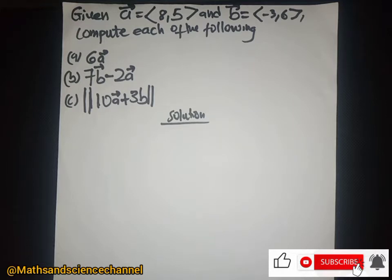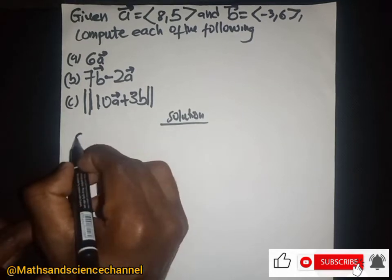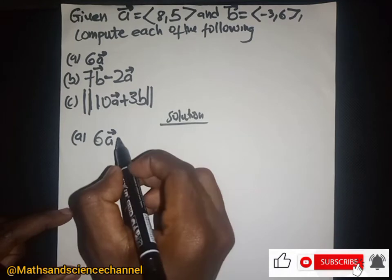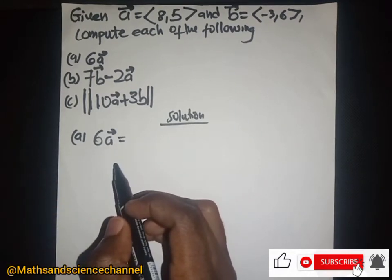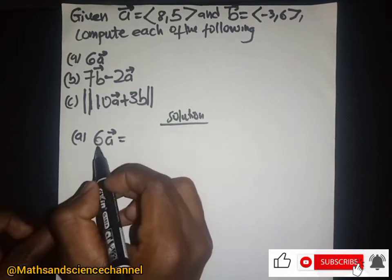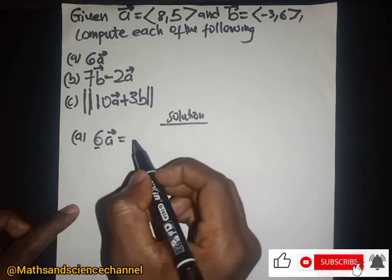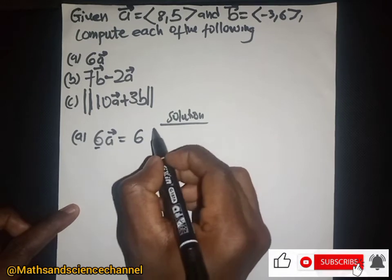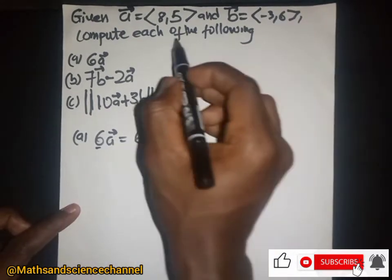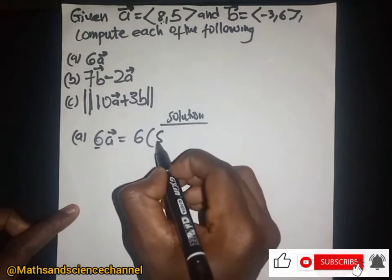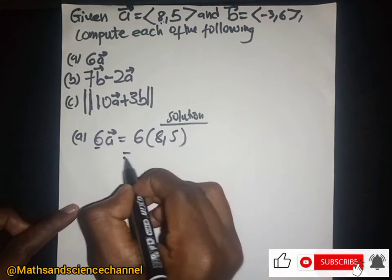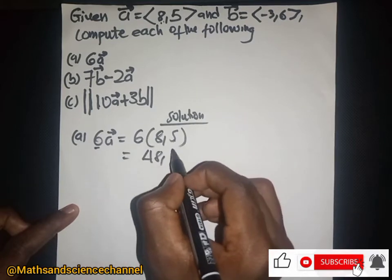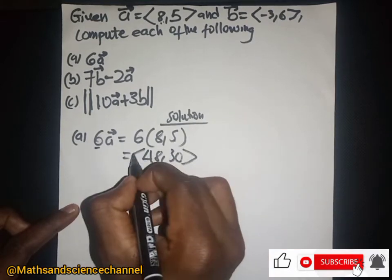For part (a), we have a = 6 multiplied by vector a. This is just a scalar multiplication problem — we multiply each component by 6. So we have 6 times (8, 5), giving us 6×8 = 48 and 6×5 = 30. So the answer for part (a) is (48, 30).